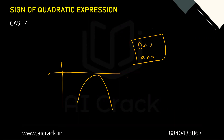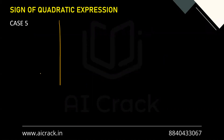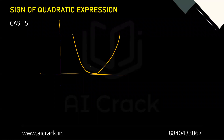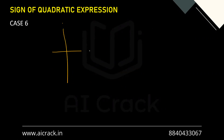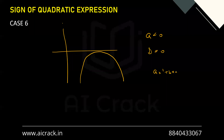The fifth case: the parabola just touches the x-axis at one single point. D = 0 and a > 0, so ax² + bx + c ≥ 0, since it is always positive or zero at just one single point. The opposite sixth case: a < 0 and D = 0, so ax² + bx + c ≤ 0, because it is zero at one point and negative everywhere else.